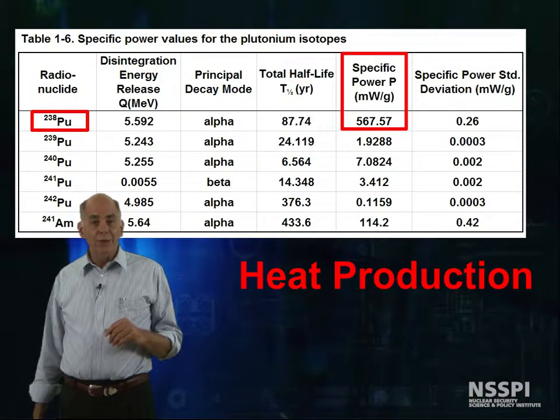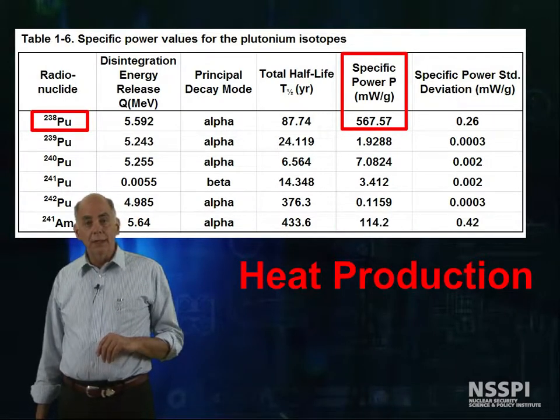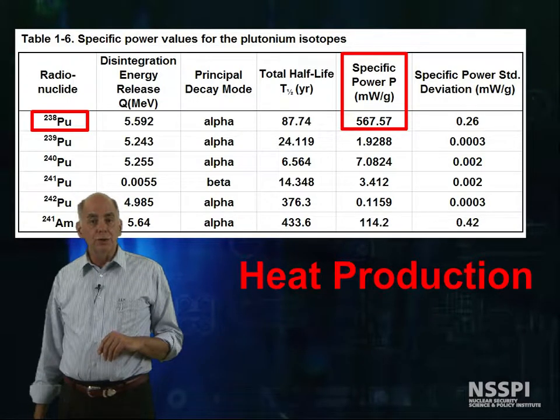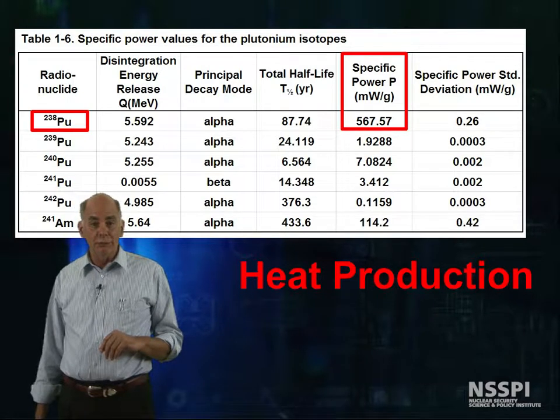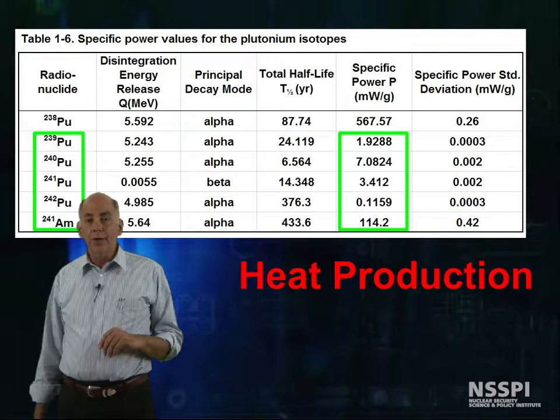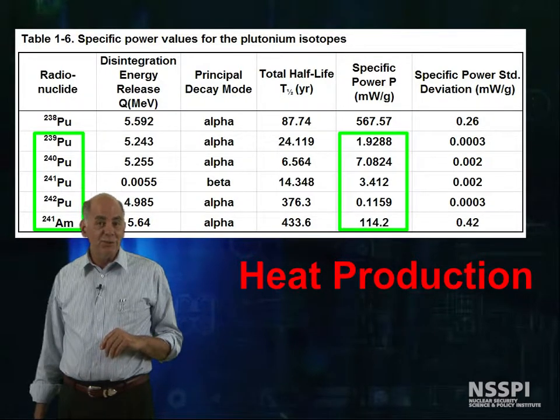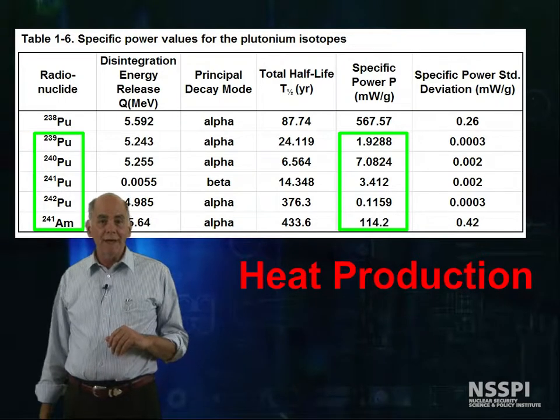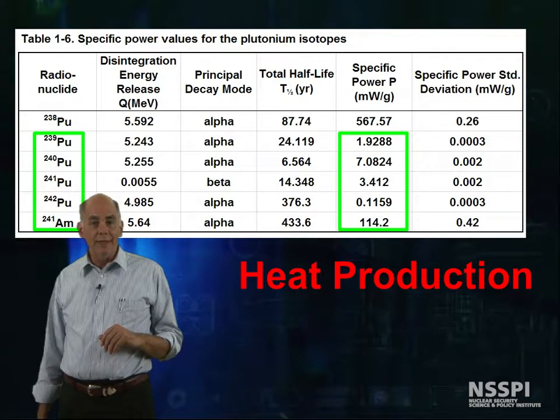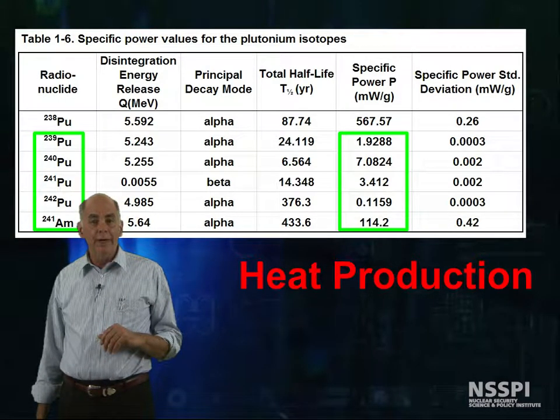Plutonium-238 is so good at producing heat that it's used as the energy source for deep space missions, such as the Cassini mission. The other actinides listed here are less impressive, but it doesn't take much mass to produce enough heat that the infrared radiation can readily be detected.